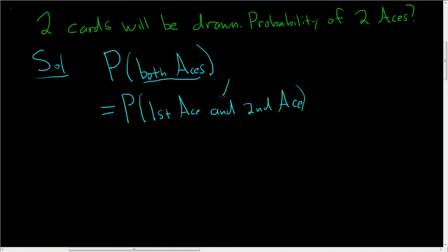And whenever you have an and, you want to use what's called the multiplication rule for probability. Okay, so we can just go ahead and compute the individual probabilities and multiply.